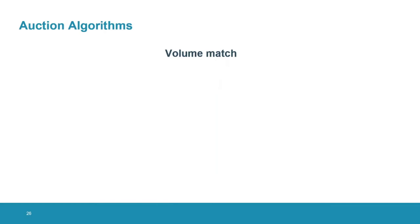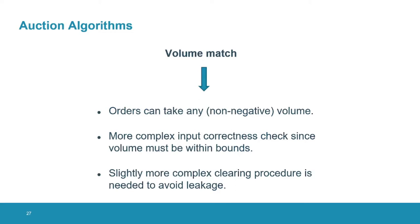In the volume match, we have one single list but now orders can have any non-negative volume. This means that investors can submit a single order independently of the volume they want to trade, so in general we will have fewer orders to process in the volume match than in the bucket match. However, there is an input correctness check that we require the orders to pass, because we are working over finite fields and do not want overflows to occur. To prevent this, we enforce an upper bound on the volume of the orders, though this upper bound is high enough that investors can still submit orders of very high volume.